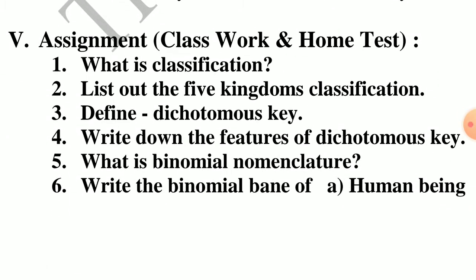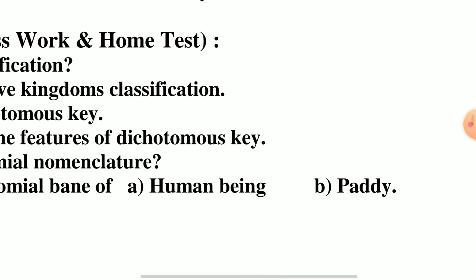Assignment. First question: what is classification? Second question: list out the five kingdoms of classification. Third question: define dichotomous key. Fourth: write down the features of dichotomous key. Fifth: what is binomial nomenclature? Sixth: write the binomial name of human beings and paddy.